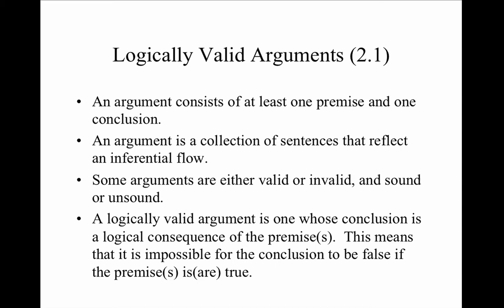Still another way to put this is that the inference is valid or invalid. We can say that an argument as a whole is valid or invalid. We're talking about what sort of relationship the evidence has to the sentence that is inferred. An argument consists of at least one sentence serving as evidence or reason to believe the other — that sentence is called the premise. The conclusion is the sentence supported by the premise or premises.